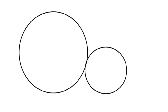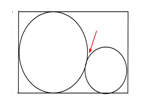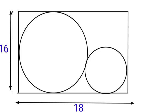We are given two circles touching each other at this point, inscribed inside a rectangle of length 16 units and width 18 units. We are to find the radius of the small circle.